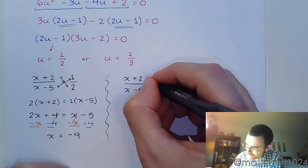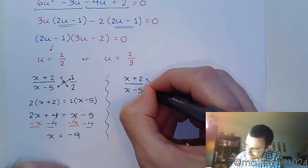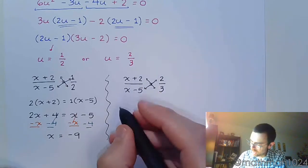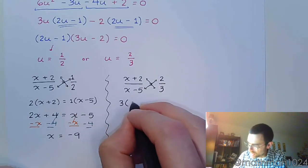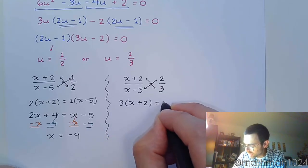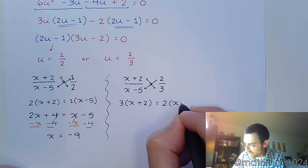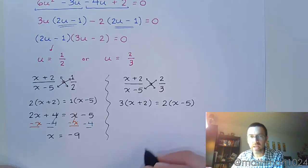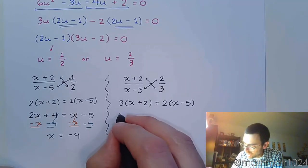And again, you have a proportion, so we're going to set the cross products equal. I suggest that you go ahead and write it like this before you multiply. So 3 times x plus 2 equals 2 times x minus 5. And now we can distribute.